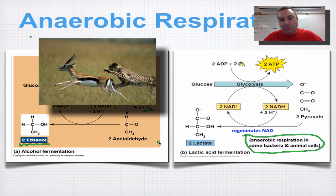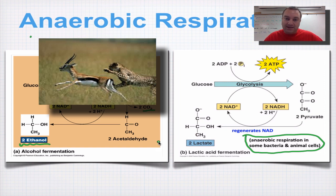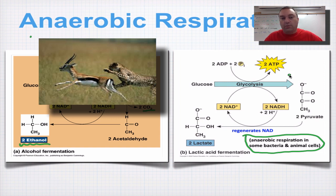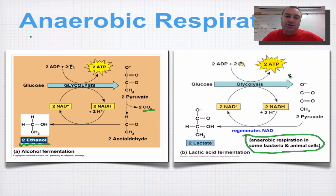Imagine you're a gazelle on the savannah with a cheetah chasing you. As you begin to run, your muscles would be producing alcohol — you'd get tipsy and it would be easier for the cheetah to catch you. And if the cheetah's muscles were doing alcoholic fermentation, he'd be getting drunk and couldn't catch anything either. So animals evolved lactic acid fermentation so they could still function during vigorous exercise, catch their food or run away. That ends chapter nine — study up for your celebration of knowledge!